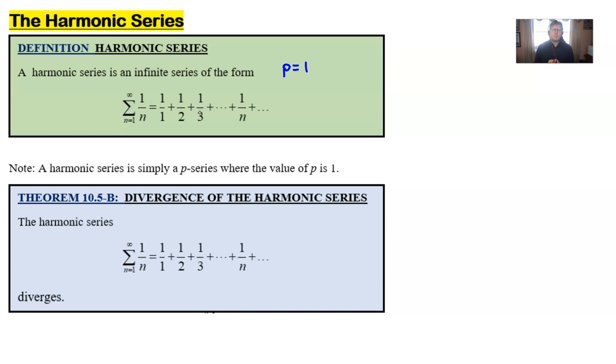Nothing has changed. Remember, p-series will only converge if p is strictly greater than 1. So, p being equal to 1 puts it into that divergent category. You're going to see this harmonic series all over the place, and we want to be kind of comfortable with it.